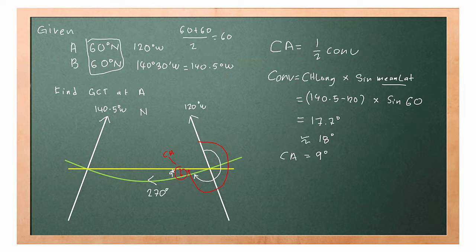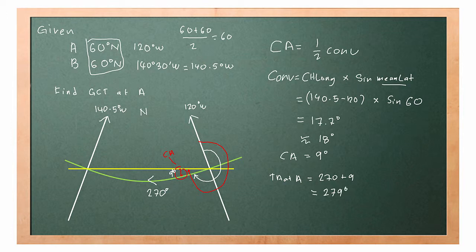To find the answer we add 270° and 9°. The true great circle track at A equals 270° + 9° = 279°.